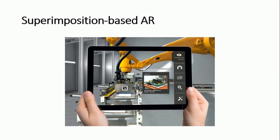Next is superimposition-based augmented reality. For example, with a mobile phone, we don't know what components are used inside to create it. Using a superimposition-based AR tool, we can see the devices and design components under the mobile phone. This is superimposition-based augmented reality.